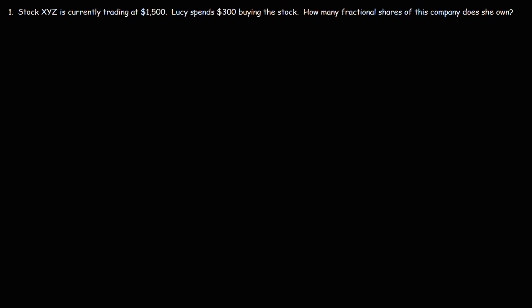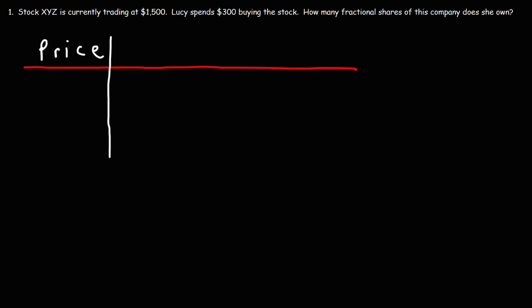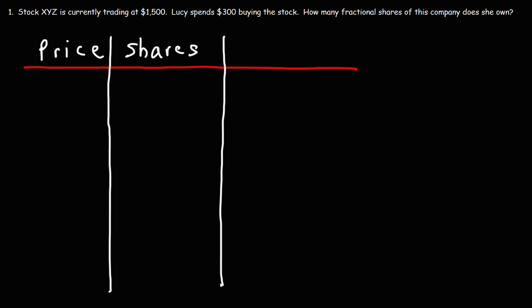In this video, we're going to talk about the math behind owning fractional shares of a company. To understand this concept, let's make a table. In the first column, we're going to have the price of the stock. In the second column, this is going to represent the number of shares. And the third column is going to represent the value of the investment.